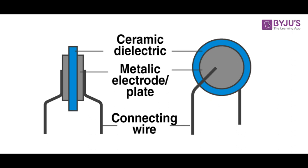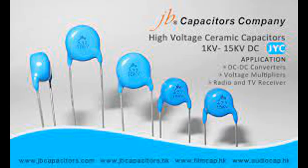Capacitors often have markings or labels indicating their capacitance value, voltage rating, tolerance, and sometimes polarity. These markings help users identify and correctly use capacitors in electronic circuits. Capacitors can be configured in various shapes and sizes depending on the specific application, including cylindrical radial or axial leads, rectangular, surface mount, and disc-shaped for high-voltage applications.